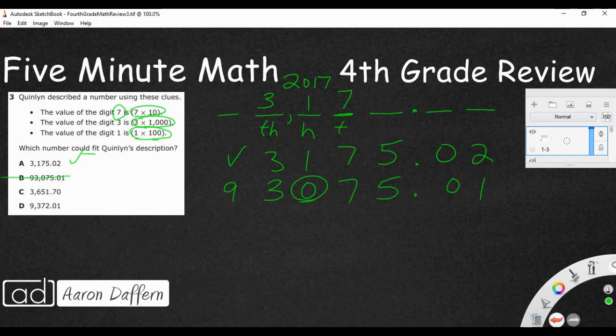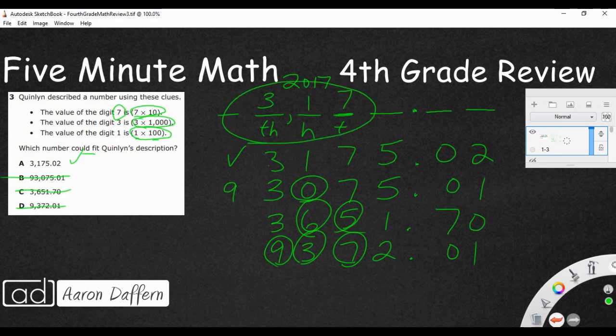C is going to be 3,651. That's wrong in two different spots. And 70 hundredths. So that's a definite no. And we've got 9,372 and 1 hundredths. So that doesn't have any digit correct. It is wrong, wrong, and wrong. So it's pretty obvious there. But this is the way that it would be a good suggestion for solving this. Spreading everything out. Filling in your clues first. And then lining up everything underneath so you can clearly see that A is going to be our correct answer.